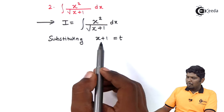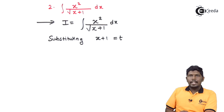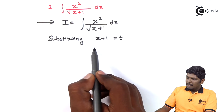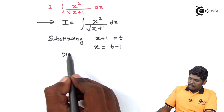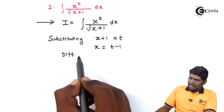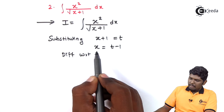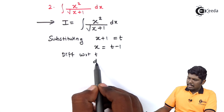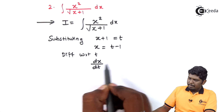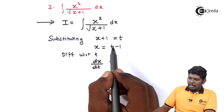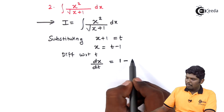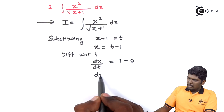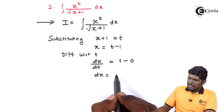The first step will be to find the value of x, and the second step will be to find the value of dx. The value of x will be t minus 1. Differentiating with respect to t, we have dx by dt equals 1 minus 0, which gives dx equal to dt.